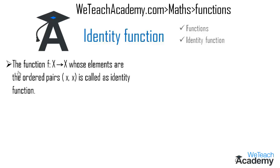If f is a function from x to x whose elements are the ordered pairs (x, x), this is called an identity function. The identity function maps each x to itself.